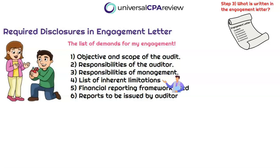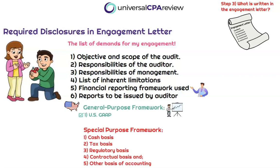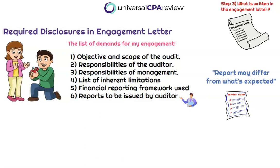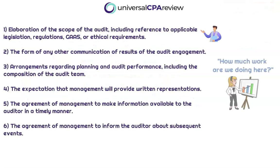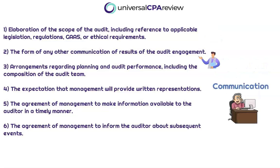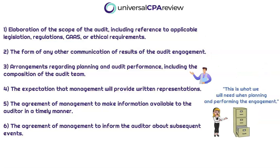We need to identify the applicable financial reporting framework — if the financial statements are reported under GAAP, that needs to be disclosed. There needs to be reference to the expected form and content of any reports to be issued by the auditor, and a statement that circumstances may arise in which a report may differ from its expected form and content. Additional contents that can be included are elaboration of the scope of the audit, including reference to applicable legislation, regulations, generally accepted auditing standards, or ethical requirements.